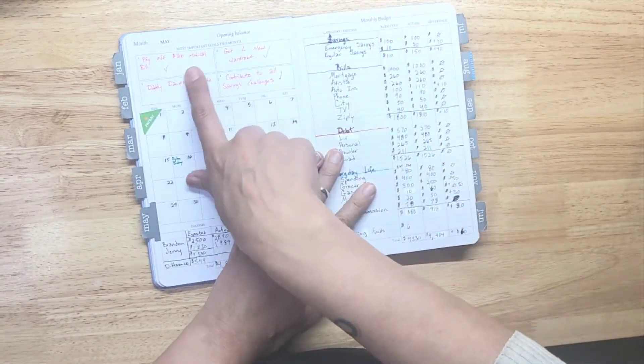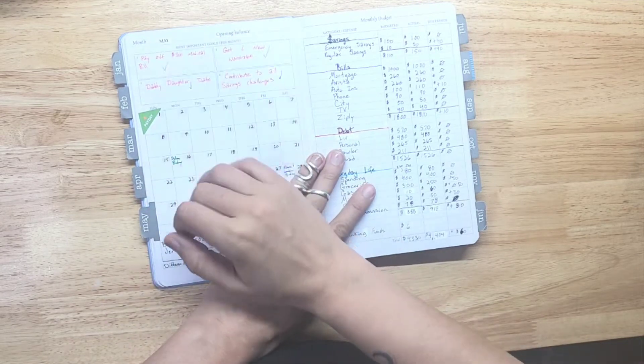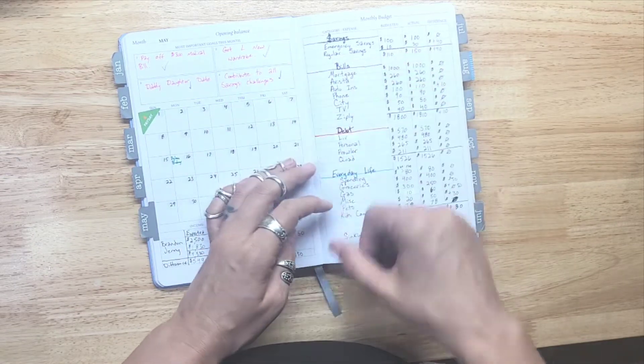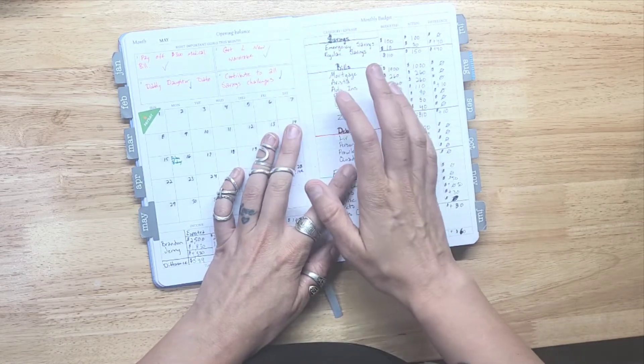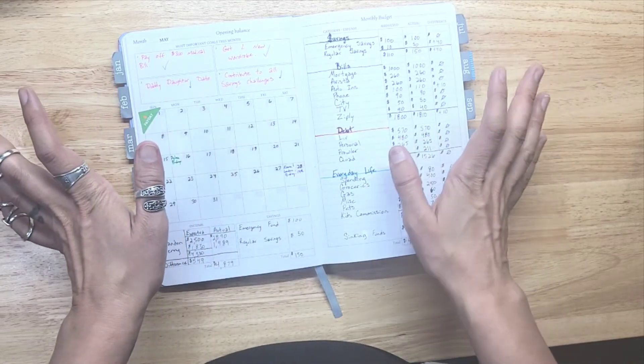So let's go to May. So May our goals were to pay off $300 in a medical bill which we accomplished. We paid for the daddy-daughter date which got done. They had a great time eating sushi and whatnot. Got my son a new wardrobe and we contributed to absolutely all of the savings funds.